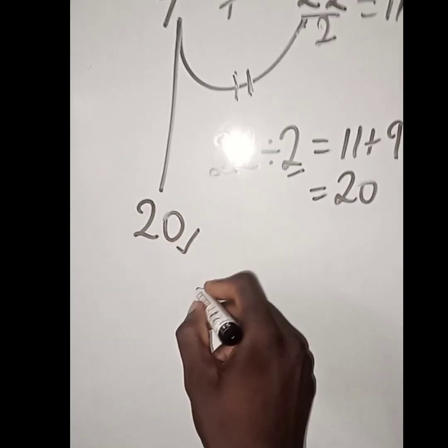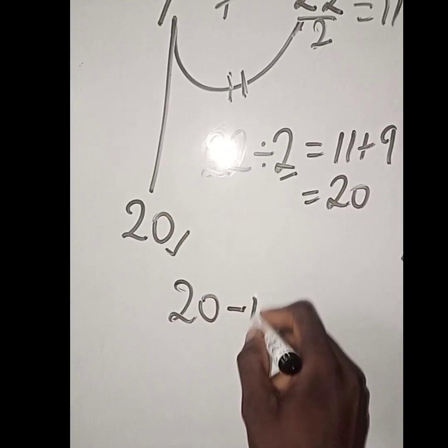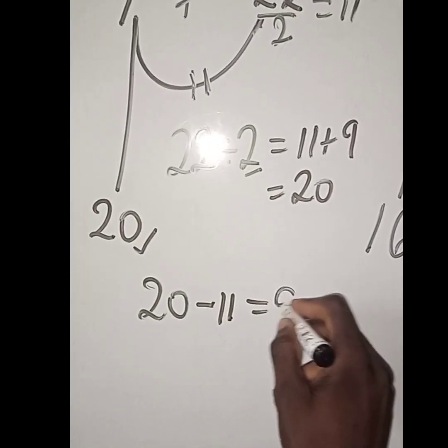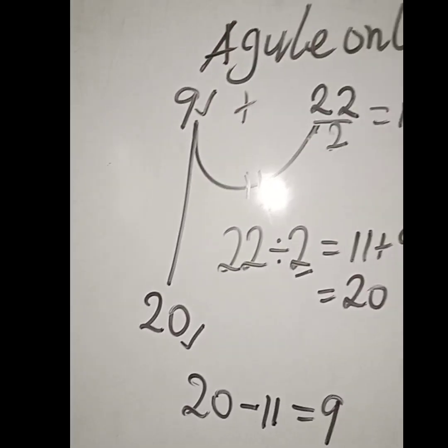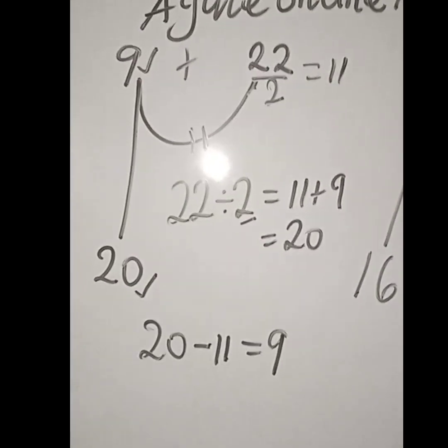So do 20 minus 11, we are going to have 9. So this is how to get the 9 up there.